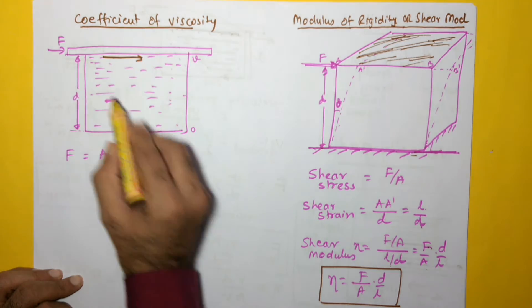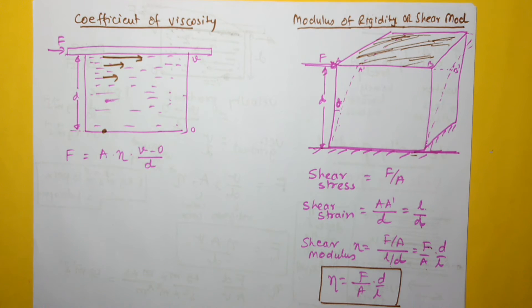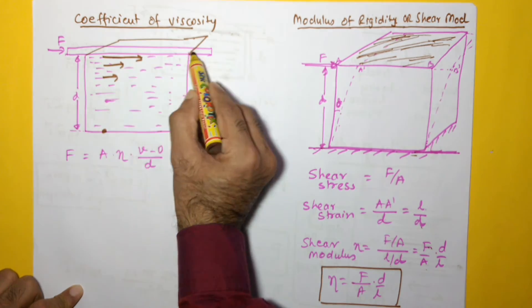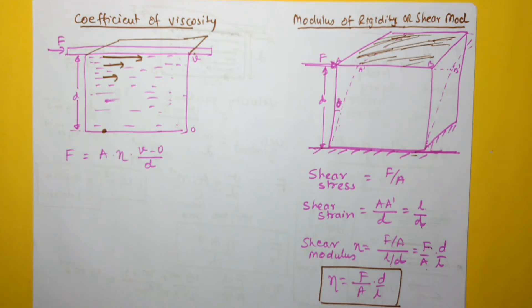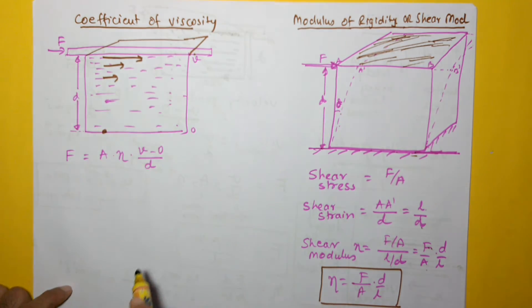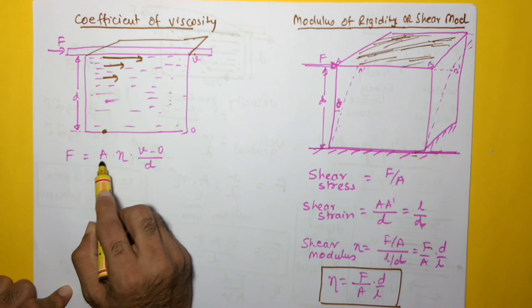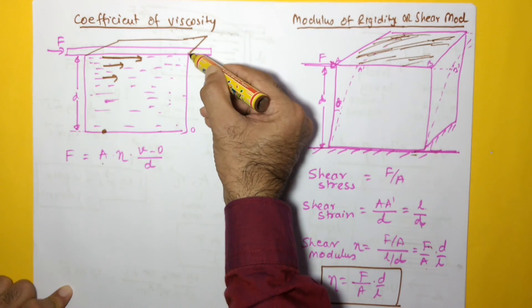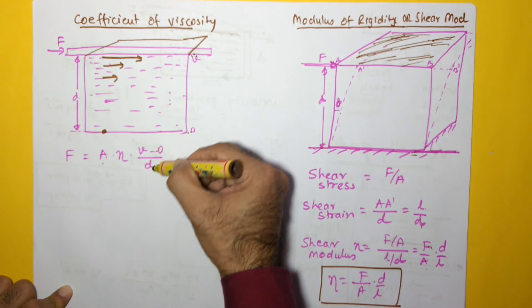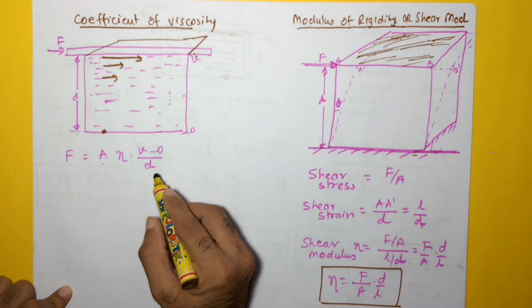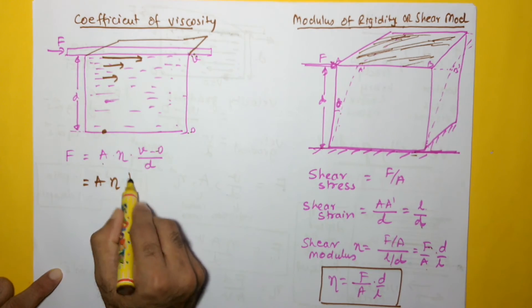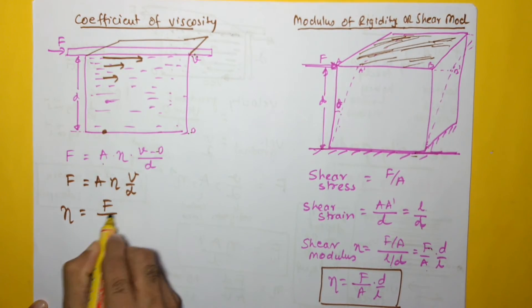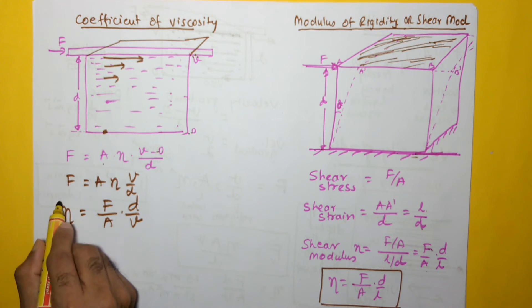The topmost layer moves with high velocity and the velocity keeps decreasing down to zero. The surface area A is the contact area between the plate and the surface of the liquid. The viscous force depends on the contact area A, the coefficient of viscosity η, and the velocity gradient v/d. This gives: F = A · η · (v/d), and therefore η = F · d / (A · v).